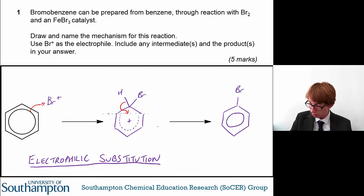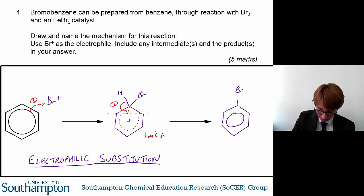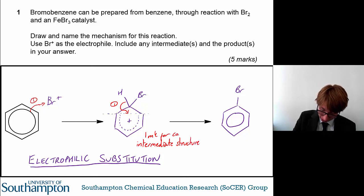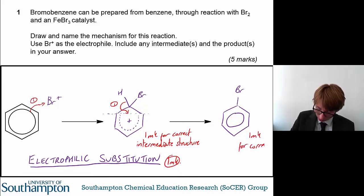So where do you get the marks? You get one mark for the first curly arrow, one mark for the second curly arrow, one mark for the intermediate structure being correct — that's with the horseshoe — one mark for the name of the mechanism, and one mark for the correct product structure. That's everything you need to make sure you include in this question.